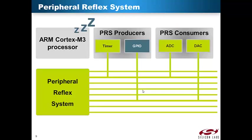The Peripheral Reflex System can be seen as a network of wires routed between the different EFM32 peripherals. When using PRS, two peripherals connect to the same PRS channel — one as a producer, the other as a consumer. A PRS producer is a peripheral that generates a reflex signal on a PRS channel, while a PRS consumer is a peripheral that is triggered by a reflex signal. Each PRS channel selects one producer, while several consumers can be set up to listen to the same PRS channel. The number of PRS channels varies between 4 to 12 on the different device families. Some peripherals can act as both a producer and a consumer, enabling complex PRS event chains to be set up.